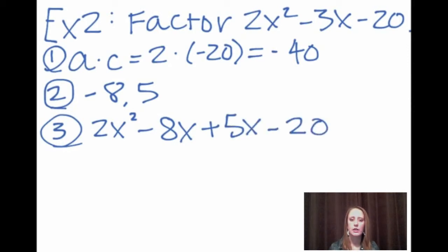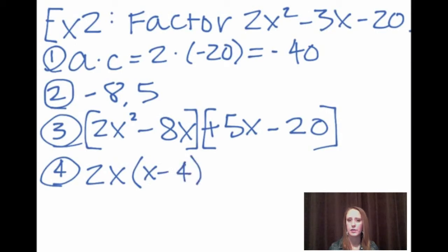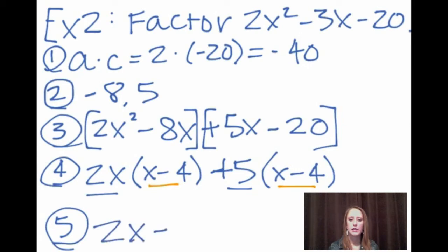In step four, we factor the greatest common factor out of the first two terms and the last two terms. The greatest common factor for the first two is 2x, leaving us with x minus 4 after we divide it out. And the greatest common factor of the last two terms is a positive 5 and that also leaves us with x minus 4 after we divide it out. As you can see, the parts in parentheses are the same just like we wanted them to be. Now we connect the two parts outside the parentheses together. So our answer becomes 2x plus 5 times x minus 4.